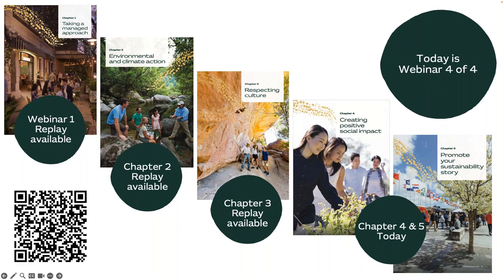Over the last three weeks or so, this webinar series has gone through the five different chapters of the Sustainable Tourism Toolkit. Today is webinar four of four, and all webinars have been recorded with replays available. Webinar one covered taking a managed approach, chapter two was environmental and climate action, chapter three was respecting culture, and today we're covering chapter four — creating positive social impact — and chapter five — promoting your sustainability story. We highly encourage you to go back and watch the replays from modules one, two and three.